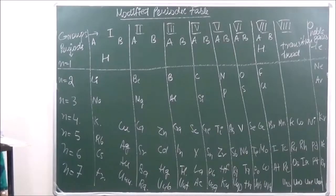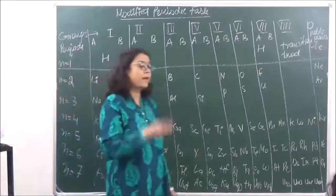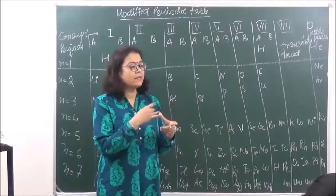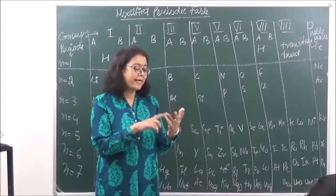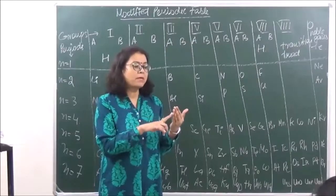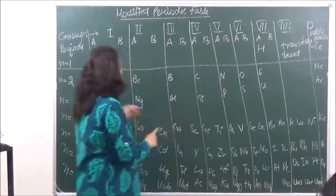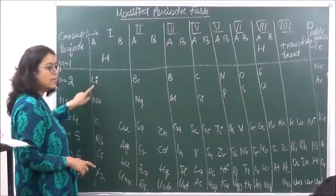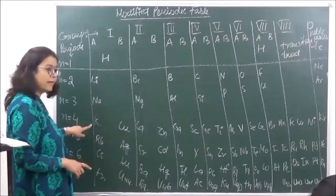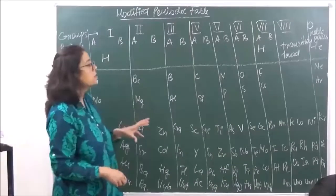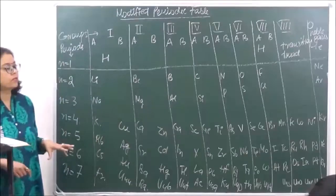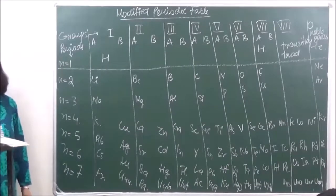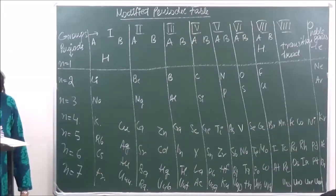It was said that similar properties recur after the numbers 2, 8, 18, 18, and 32. These are known as the magical numbers in the periodic table. For example, in the first period you have hydrogen and helium; then hydrogen and lithium will have similar properties. From lithium to sodium there are 8 elements, and lithium and sodium will have similar properties. Then from sodium to potassium they will also have similar properties. So the magical numbers are 2, 8, 18, 18, and 32.